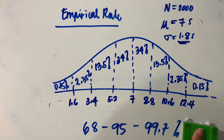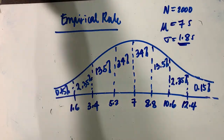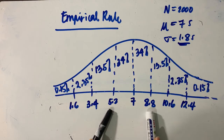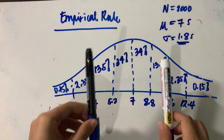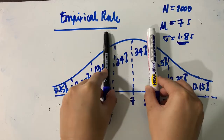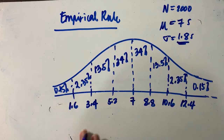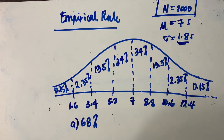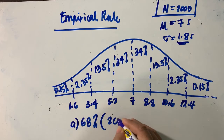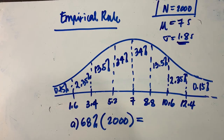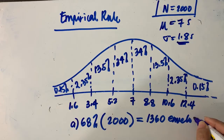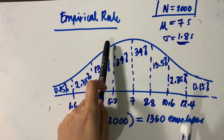We will use these intervals to answer what is required. For letter A, we are asked to find the number of envelopes that took from 5.2 seconds to 8.8 seconds. The interval from 5.2 to 8.8 corresponds to 34% plus 34%, which equals 68%. So that is 68% of our population of 2,000: 2,000 times 0.68 equals 1,360 envelopes processed from 5.2 to 8.8 seconds.